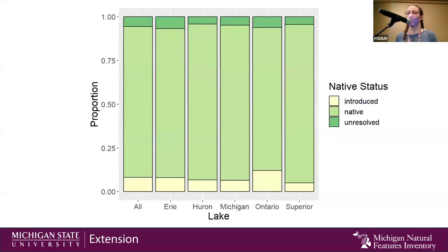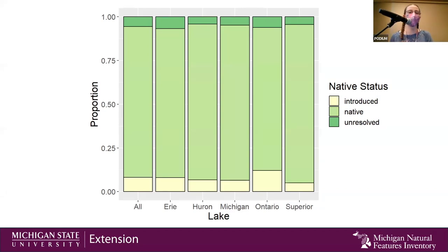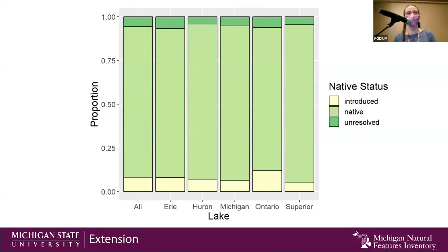The last thing we've analyzed so far has been the percent of species that are introduced to each Great Lake. Lake Ontario has the highest percentage at 12% introduced species, whereas Lake Superior has the smallest at only 5%. Again, they're opposite ends of the system with very different inputs and different influences, different vectors, and different possibilities for establishment — so nothing too surprising there either.